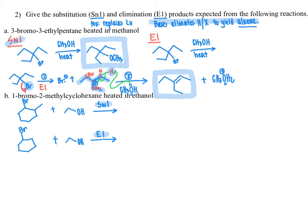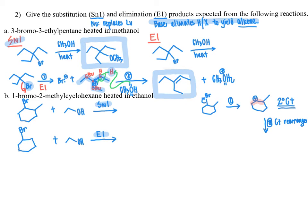Starting with the SN1, much like before, the first thing that happens is the leaving group leaves, generating our carbocation. Any time you recognize you've generated a secondary carbocation — indicated by two alkyl groups directly bonded — that's a signal to be on the lookout for a hydride shift or methide shift to create a more stable carbocation in the next step.